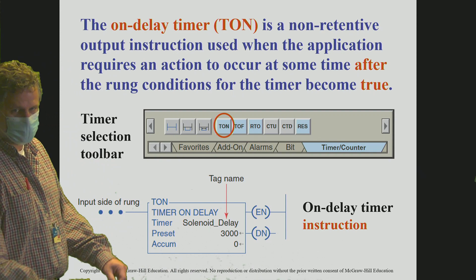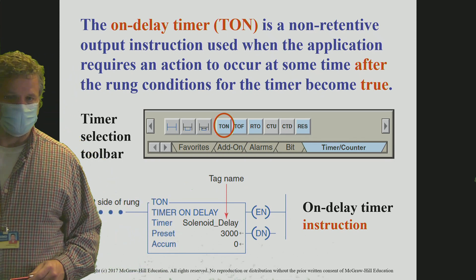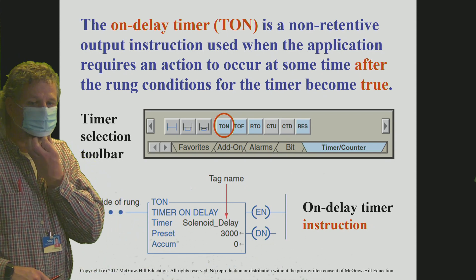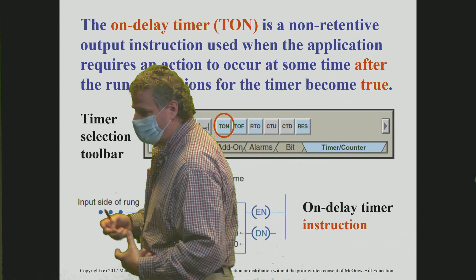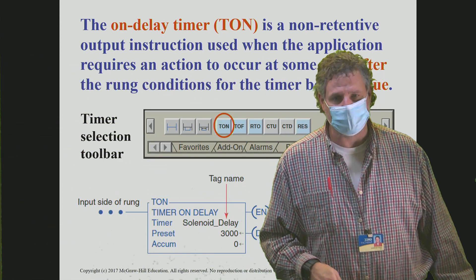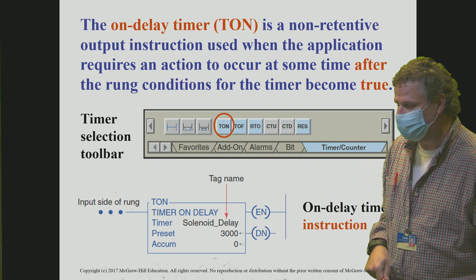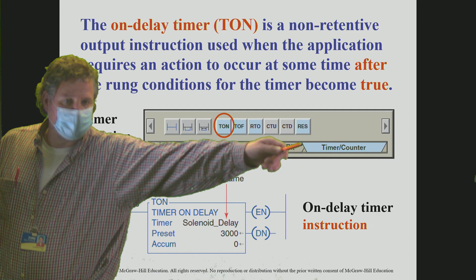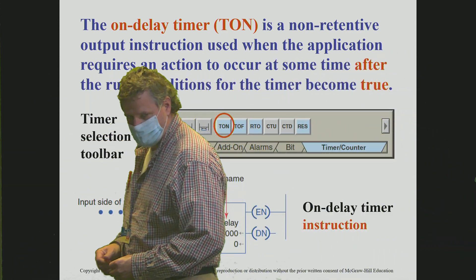Here is what that timer looks like in the PLC code — we're looking at the timer preset and accumulated value. The timer address is whatever name we decided to call it. We could call our timers anything we want, but key to that point is that the data type must be a timer data type. We find it under timer/counter, and the timer-on — T-O-N — is the button we click to create this timer.